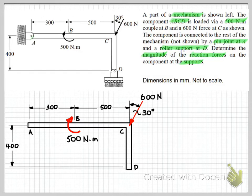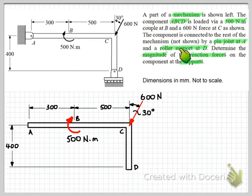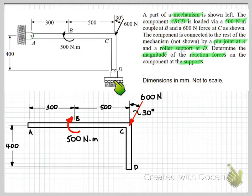Now we need to consider the forces at the reactions. Let's first consider support D. From the diagram and the question we can see it's a roller. This is free to move in the horizontal direction, so there's going to be no force component horizontally, but it's constrained from moving vertically. So we need a force there to represent the connection between component A, B, C, D and the ground.